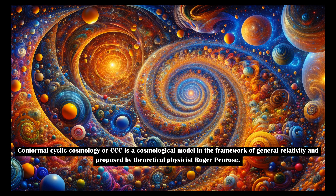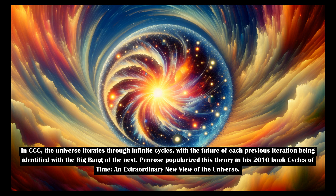Conformal Cyclic Cosmology, or CCC, is a cosmological model in the framework of general relativity, proposed by theoretical physicist Roger Penrose. In CCC, the universe iterates through infinite cycles, with the future of each previous iteration being identified with the Big Bang of the next. Penrose popularized this theory in his 2010 book, Cycles of Time: An Extraordinary New View of the Universe.